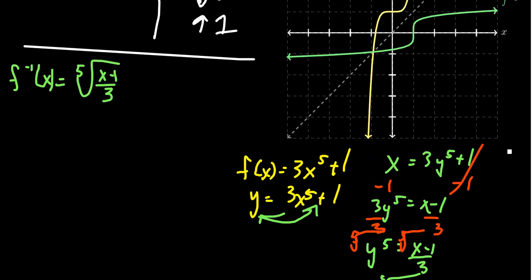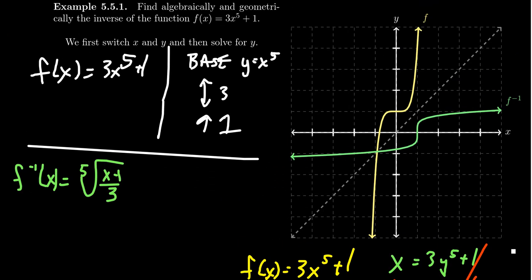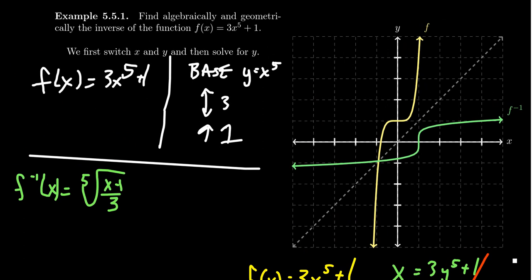The strategy is the same as before: to find the inverse function, swap x and y and solve for the new y. The graph of this inverse function is illustrated on the screen. As these are inverse functions, you should see a reflection across the diagonal line y equals x, because all points swap their coordinates. So the y-intercept zero comma one of f becomes the x-intercept one comma zero of f inverse. The point one comma four on f becomes four comma one on the inverse. Points on the diagonal y equals x are where the graphs intersect, since there the x and y coordinates are the same.